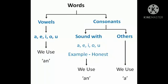Words are of two types: vowels and consonants. We use AN with the vowels and we use A with the consonants. But the main thing you have to keep in mind is that we use AN with the sound of vowels, not with the letter vowels. And we use A with the sound of consonants.